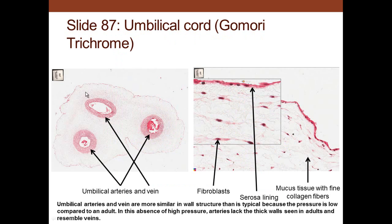In the umbilical cord, we see two arteries and a vein. The umbilical arteries are more similar in structure to the vein than typical arteries because there is lower pressure, resulting in less smooth muscle buildup. The umbilical cord also contains mucus connective tissue—fine fibers with fibroblasts throughout.